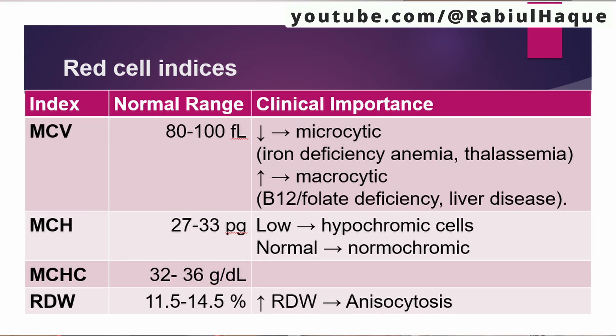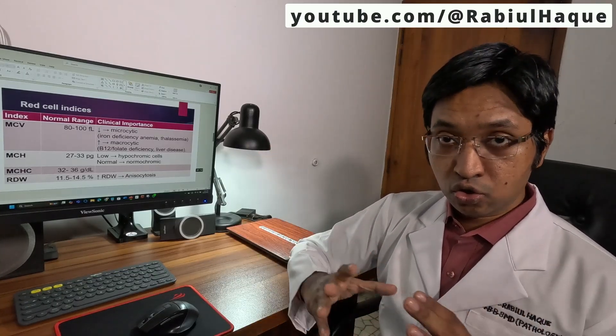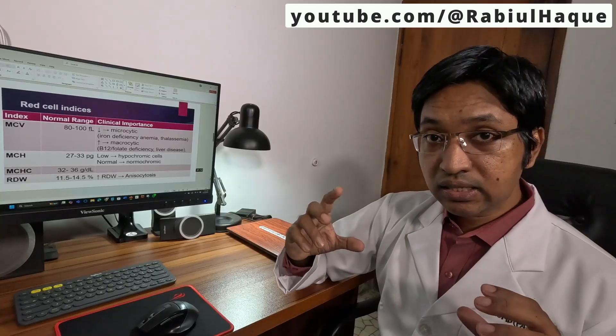Regarding MCH, that is the mean corpuscular hemoglobin, the normal level is 27 to 33 picograms. Whenever MCH is less than normal, the red blood cells will appear hypochromic — the central pallor, which is normally one third of the red blood cell, will be more. So more area will be pale and less area will be red in the red blood cells. When MCH is normal, the red blood cells are usually normochromic, meaning the central one third appears pale and the outer two thirds remain red in color.